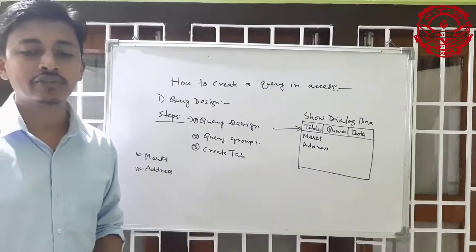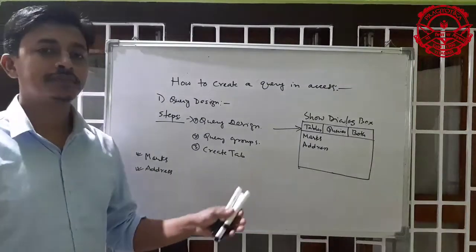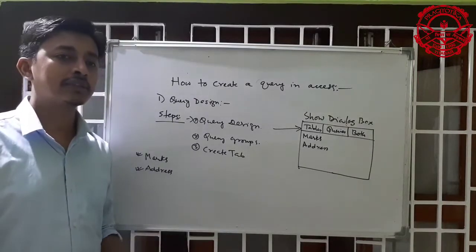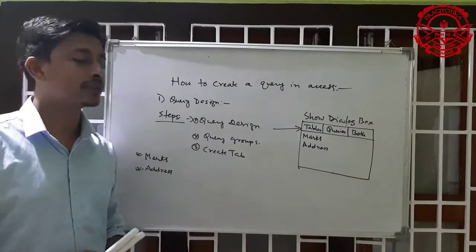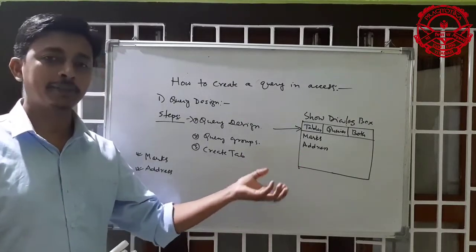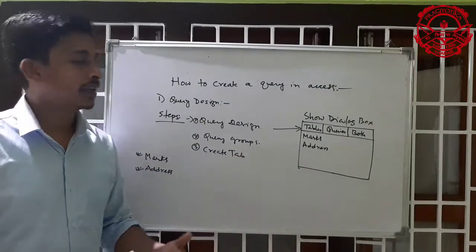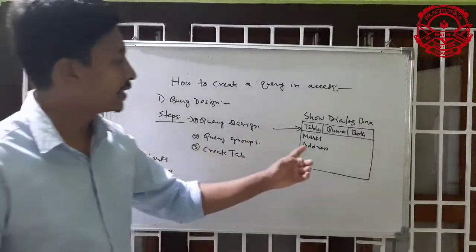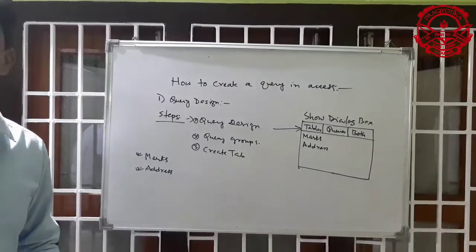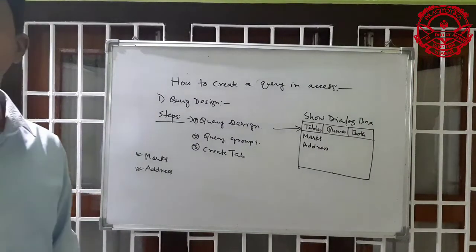If you want to add more than one table — say you have ten tables — you can repeat these steps: just select the table and click Add, or double-click on the table. In this way you can first select the tables. Then, as shown in the book, number three: click Close. When you finish adding the tables, click the close button to close the dialog box.